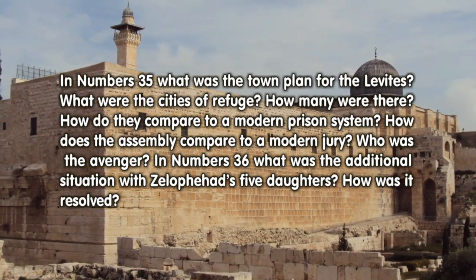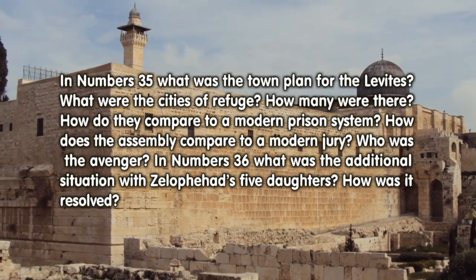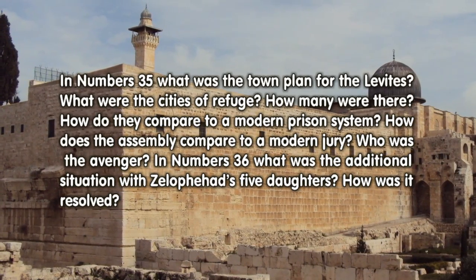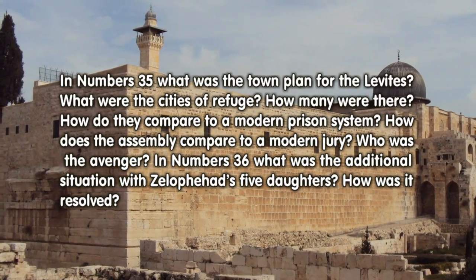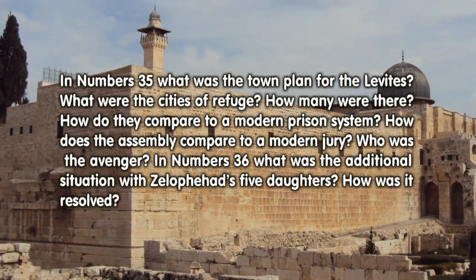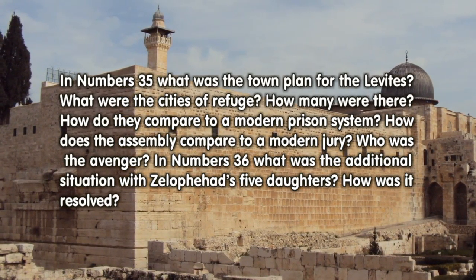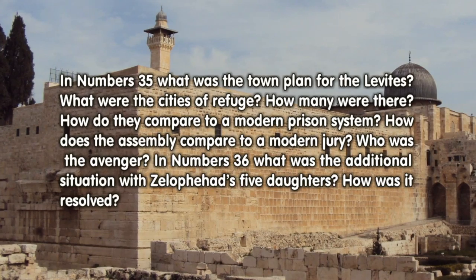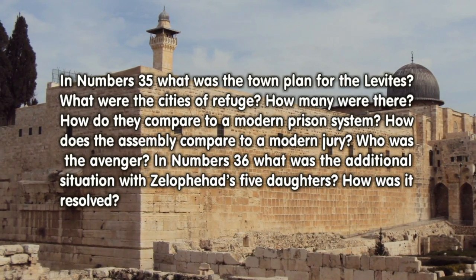In Numbers 36, what was the additional situation with Zelophehad's five daughters? How was it resolved?